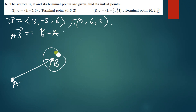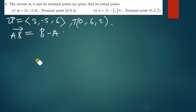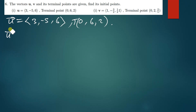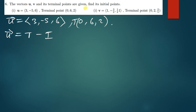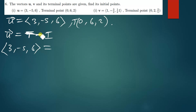So we're going to use that same principle to find vector u. The terminal is simply the head and the initial is the tail. So vector u equals the terminal minus the initial. The vector has been given as (3, -5, 6) and the terminal has been given as (0, 6, 2).